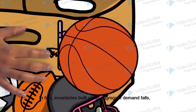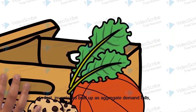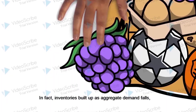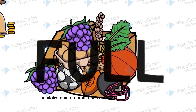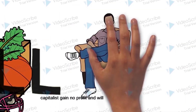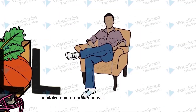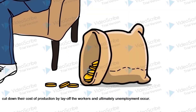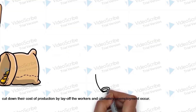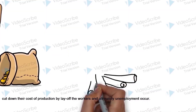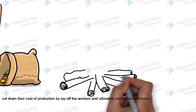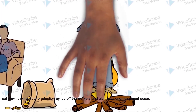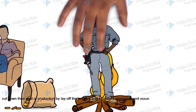Inventories build up as aggregate demand falls. Capitalists gain no profit and will cut down their cost of production by laying off workers, ultimately causing unemployment.